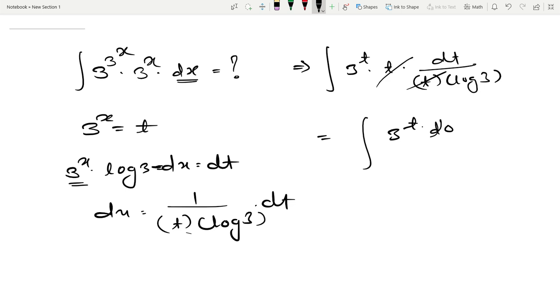This is 3 to the power t dt divided by log of 3, which can be written as 1 upon log of 3 times